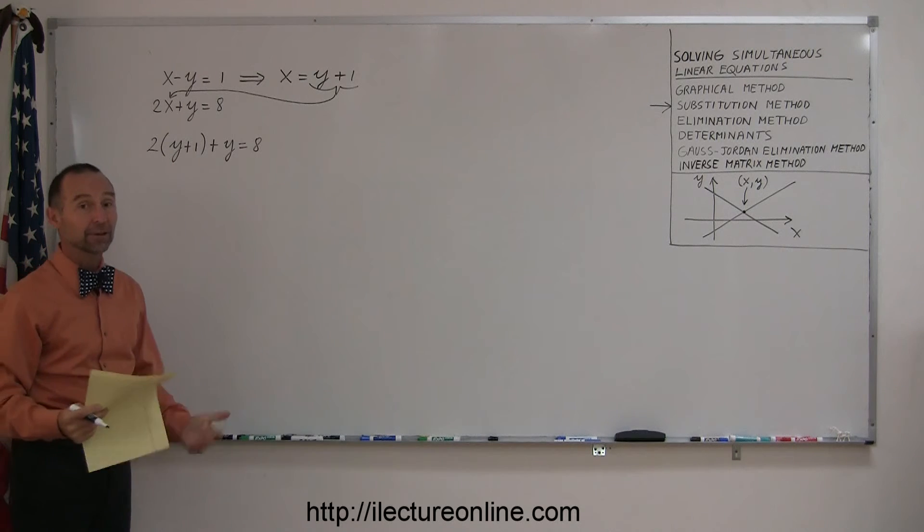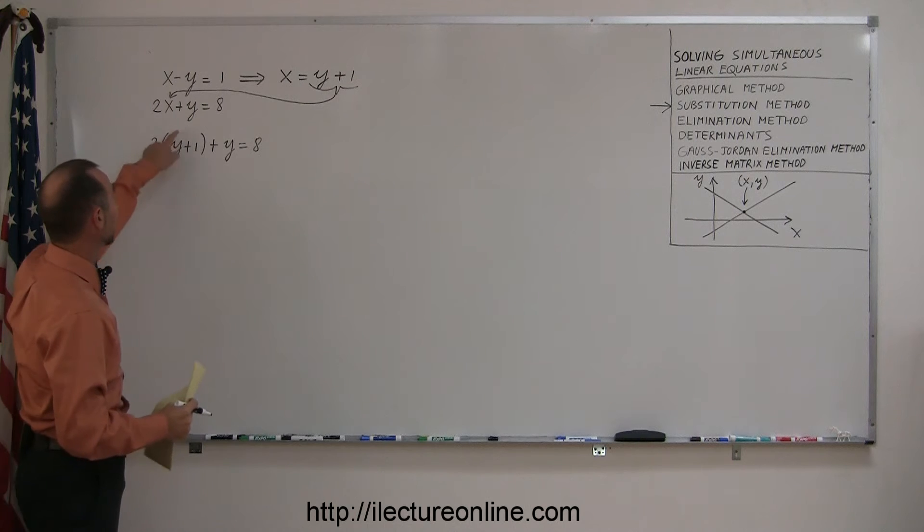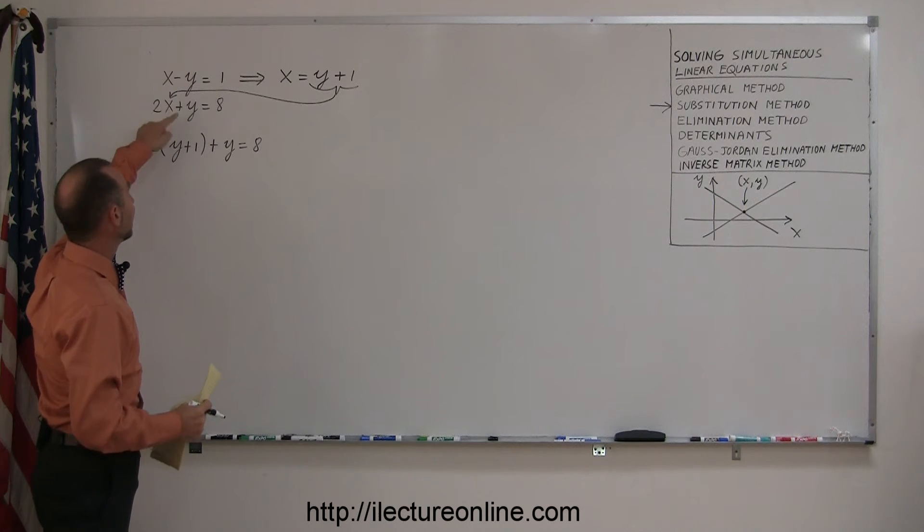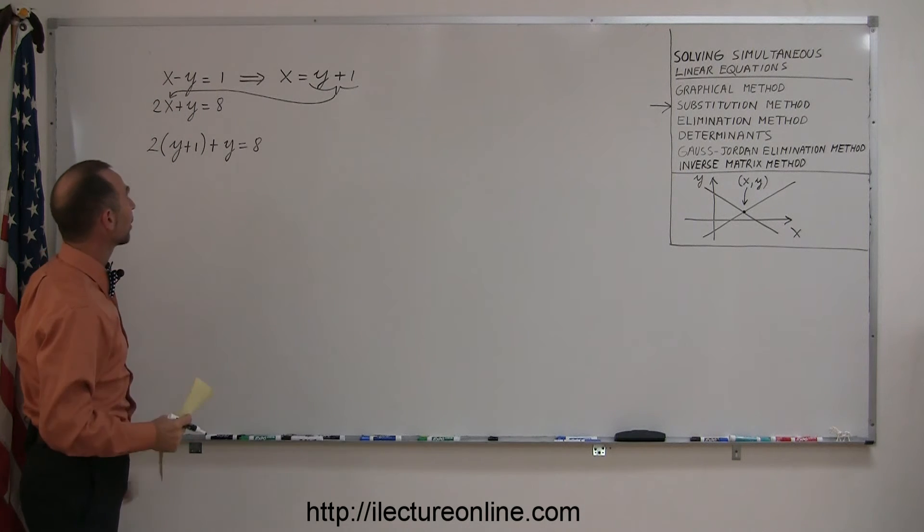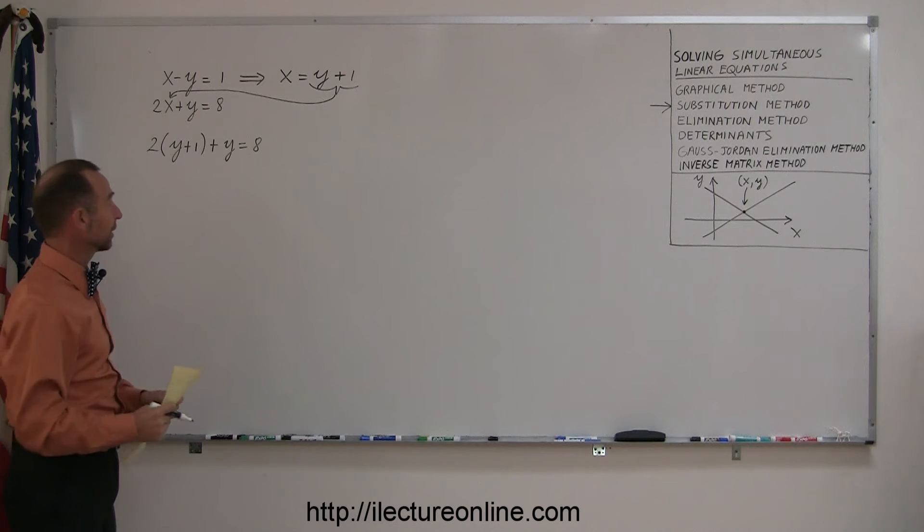That's called method of substitution. You substitute the variable of one equation into the other equation to eliminate that variable, and now you can go ahead and solve for the x and the y.